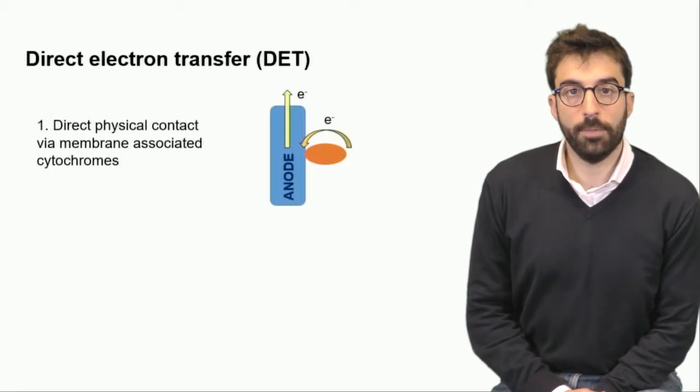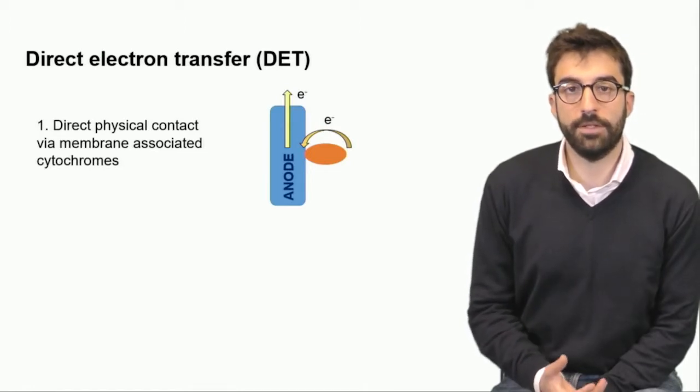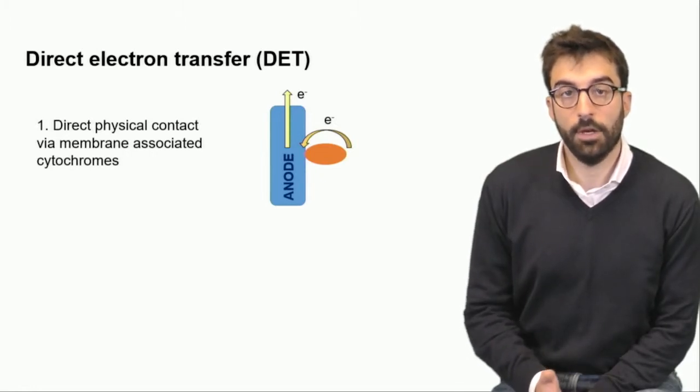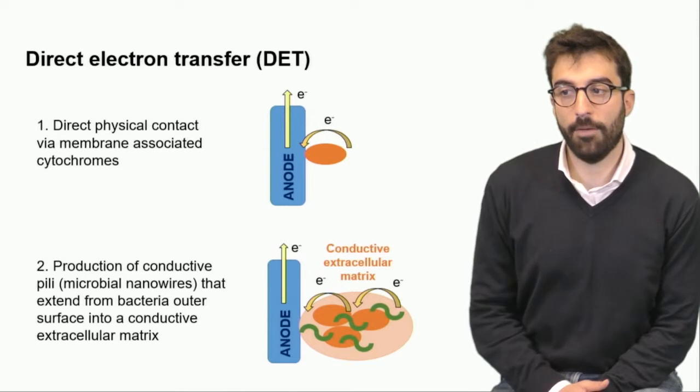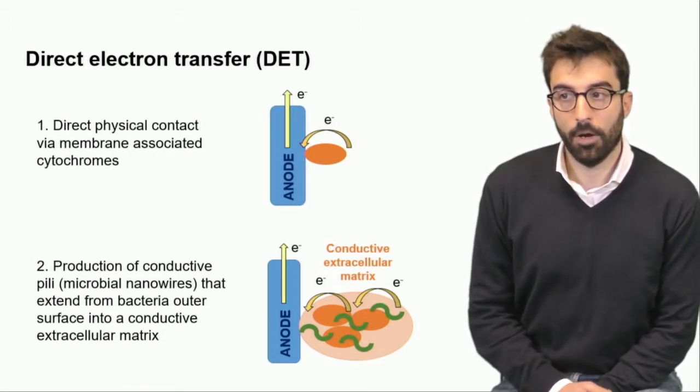Going a little bit more deep on the process that produces electrons, we can usually divide into two kinds of electron transfer. The direct one: we can have direct physical contact with the membrane associated with cytochromes. It means that bacteria are physically in contact with the anode, so the electrons reach the anode through physical contact. Or sometimes these communities build sort of conductive molecules of bacteria.